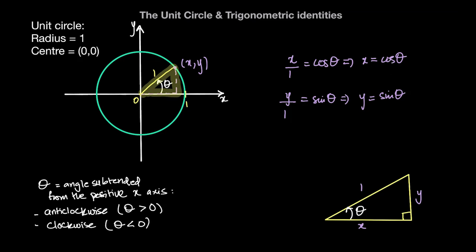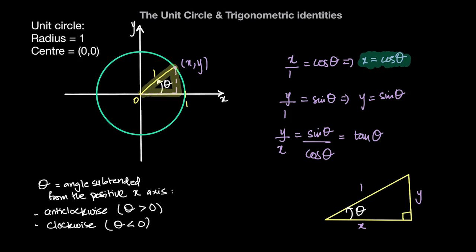And lastly, we know that the ratio between the side opposite and adjacent to angle theta — in other words, the ratio between the y and x coordinates of any point on the unit circle — can be expressed as sine of theta divided by cosine of theta, which equals tan of theta. So we have the three basic trigonometric functions: the x coordinate in terms of angle theta is cosine of theta, the y coordinate is sine of theta, and their ratio is tan of theta.